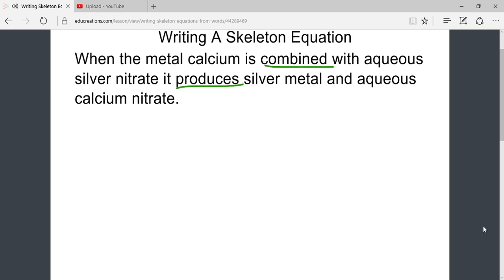When reading carefully, it states the metal calcium is combined with aqueous silver nitrate, implying that these are the reactants. It further states that it produces silver metal and aqueous calcium nitrate, emphasizing these are the products.